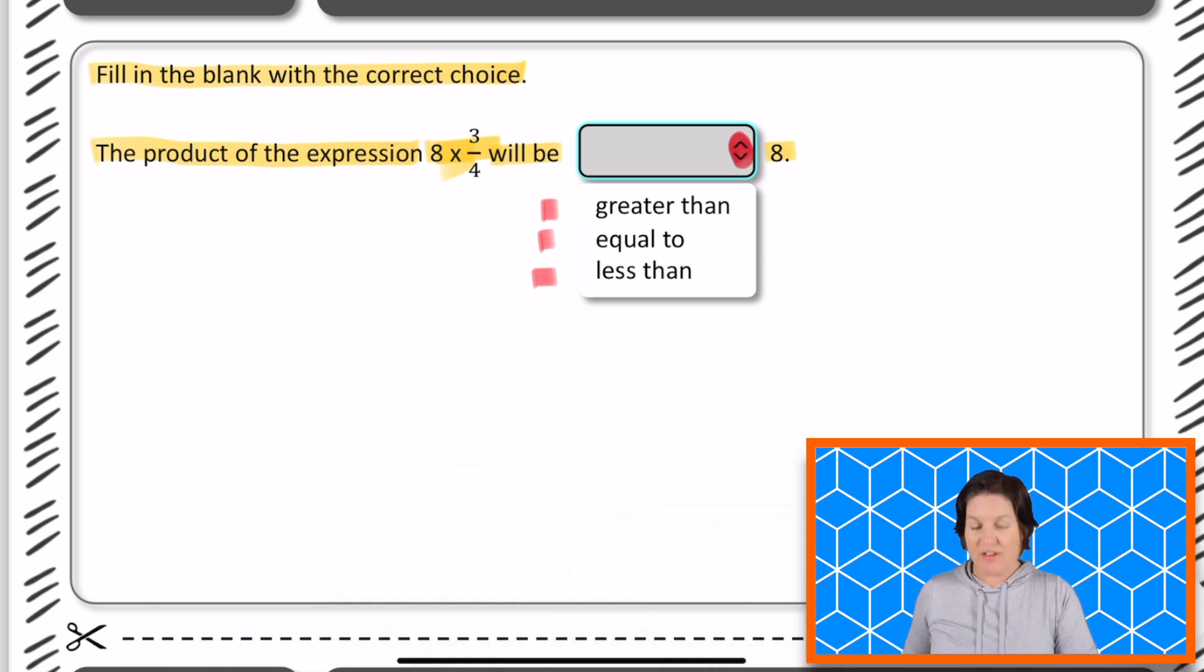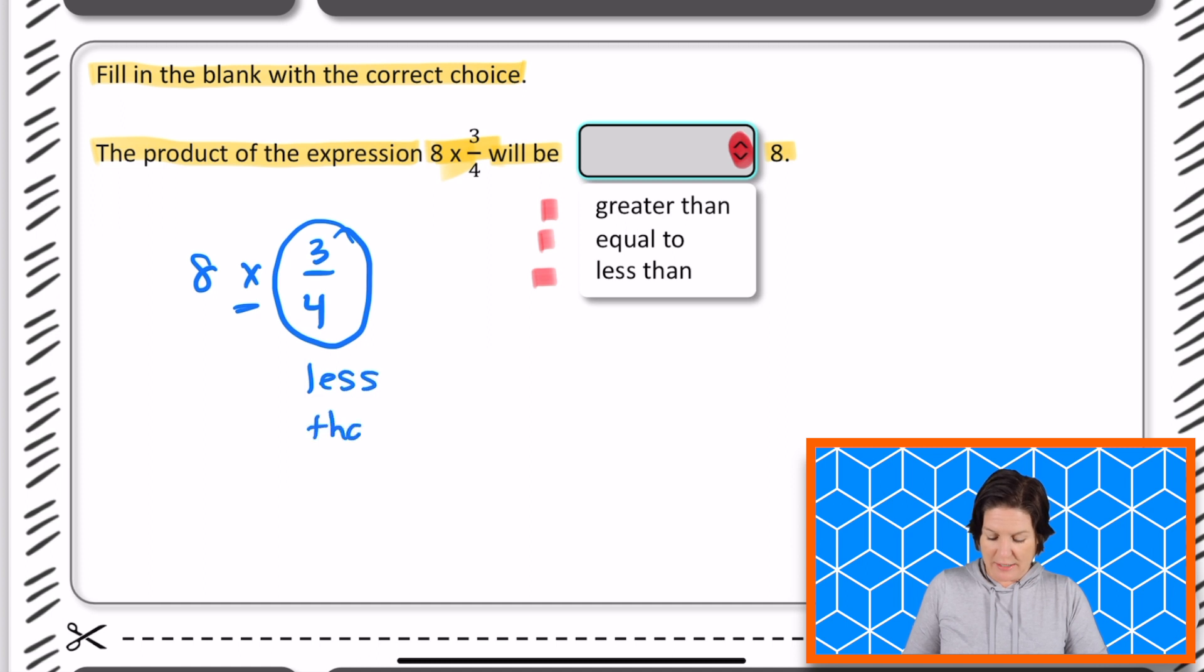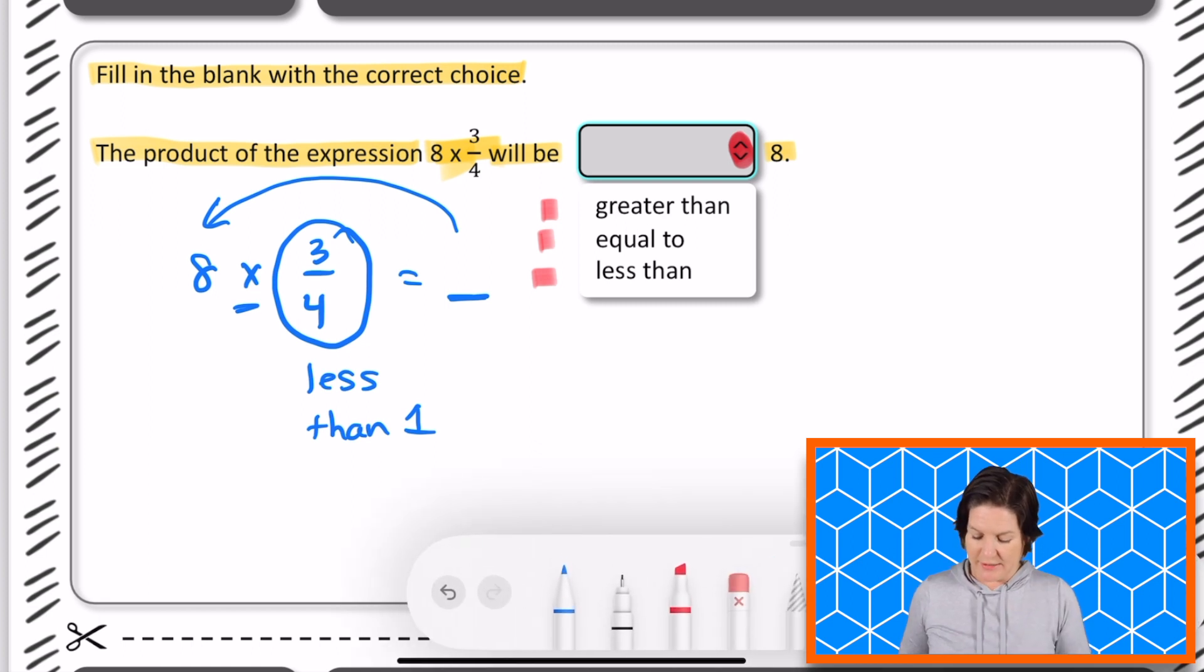These are one of my favorite types of problems because they don't take very much time once you understand what it is that you're doing. So I'm seeing 8 times 3/4. Well, whenever we multiply by something that is less than one, our product is going to be less than this original number right there. So when we multiply by a value that's less than one, it'll be less than the original number. It's going to be right here, less than.